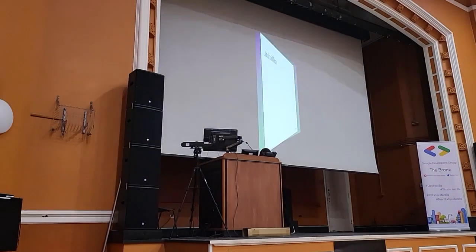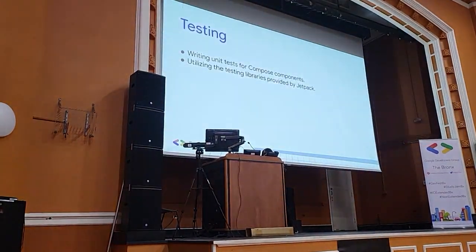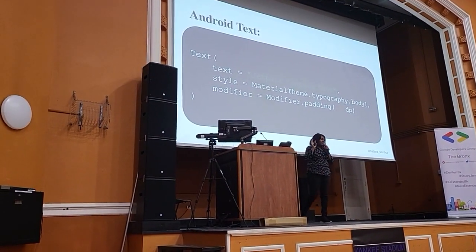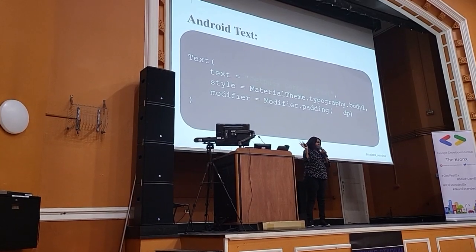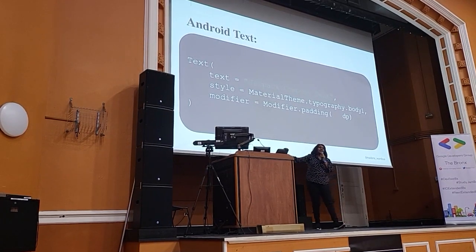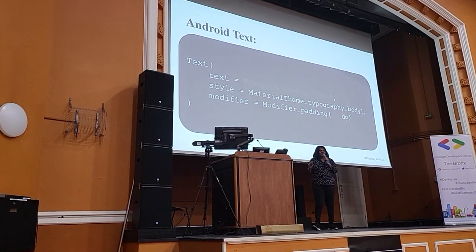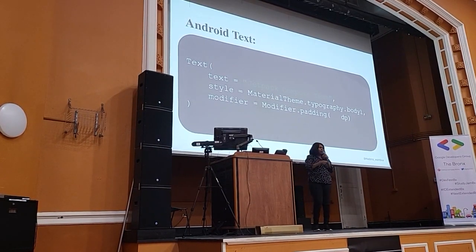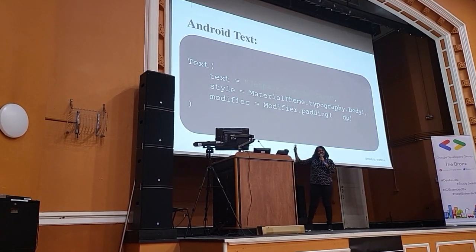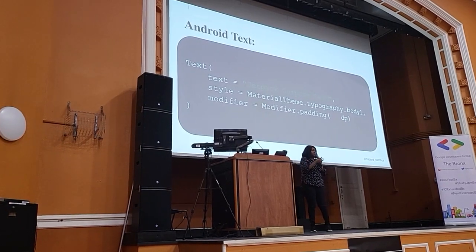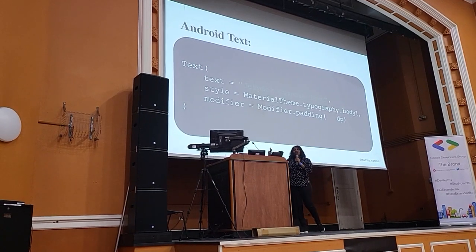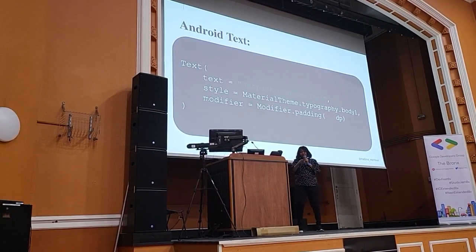Now let's look at some code. This is how an Android Text component looks like. I'm going to pause and ask: how many of us here have built for mobile, either iOS or Android? Most of you haven't, but that's why I wanted to create simple, understandable examples. A Text is a component — if you open any application, you'll see some text. This is how we create a Text in Android.